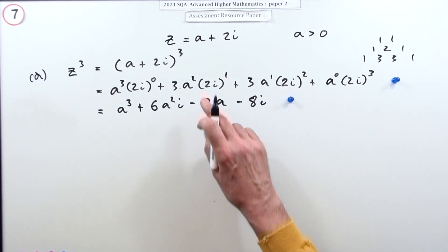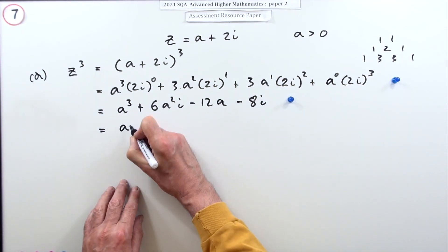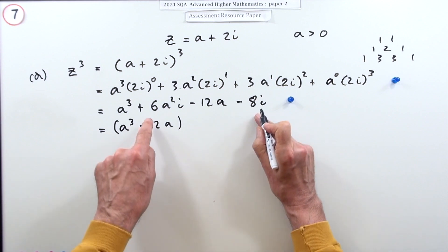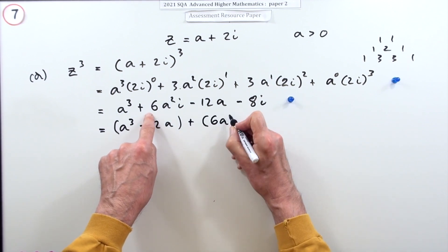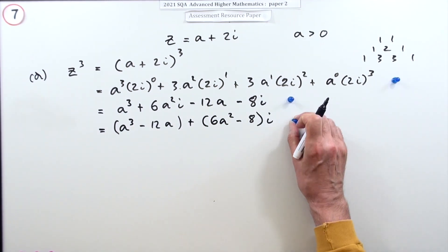Now it's meant to be a complex number, so write it in its two parts. The real part would be a cubed minus 12a, and the imaginary part is 6a squared minus 8 lots of i.